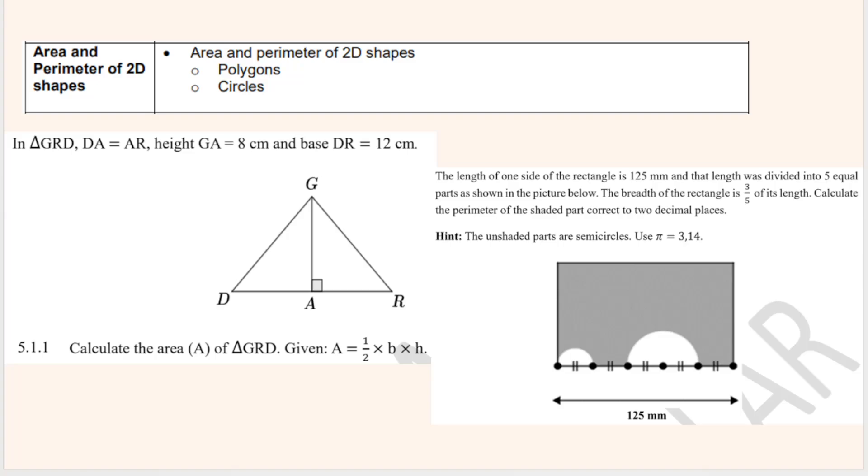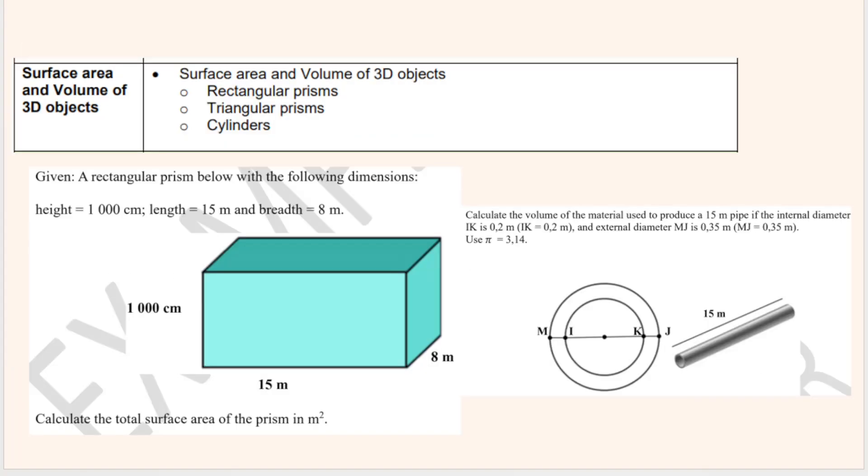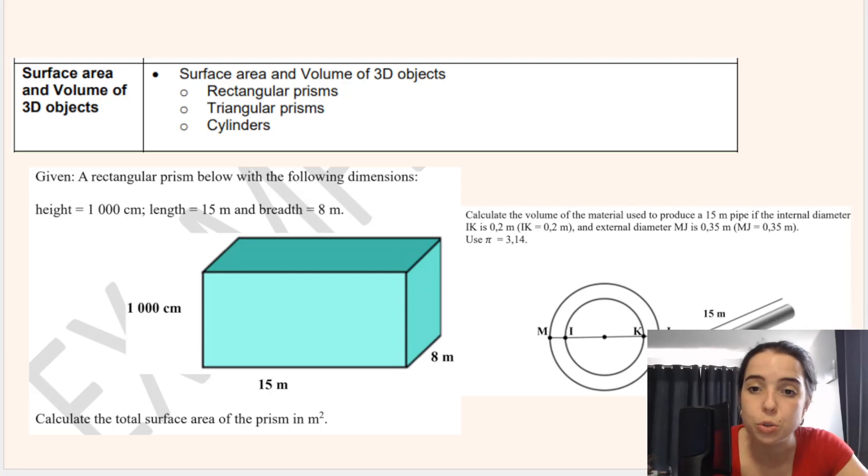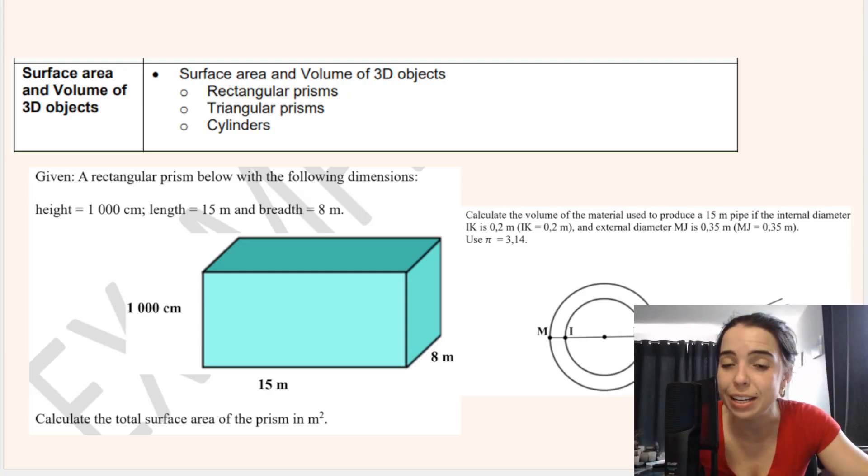Then area and perimeter of 2D shapes, so flat shapes. And then surface area and volume of 3D objects. So for these sections, it's very important for you to memorize your formulae that you will need to use. So how to calculate the surface area of a rectangular prism. You need to know the formulas that go along with that for doing surface area versus volume. Same thing for cylinders. Very, very important.